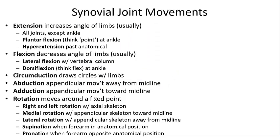Many different types of movements can occur at synovial joints. Extension is an angular movement in the anterior-posterior plane that increases the angle between articulating elements — for example, lowering a dumbbell back to the starting position. Plantar flexion is when you extend the ankle and elevate the heel, like pointing your toes. Hyperextension is where the body is extended past the anatomical position, like looking up at the stars. Flexion is the opposite of extension — decreasing the angle between two articulating elements, like lifting a dumbbell in a biceps curl.